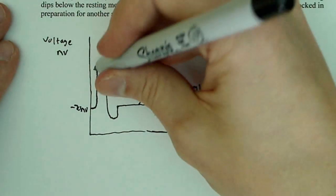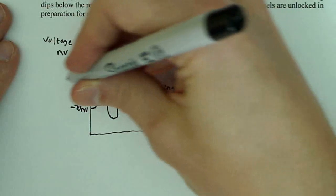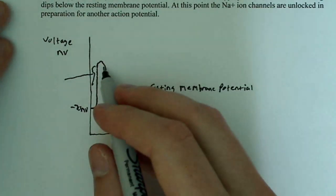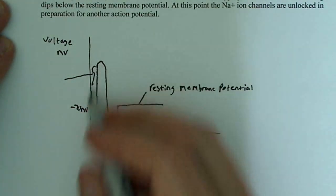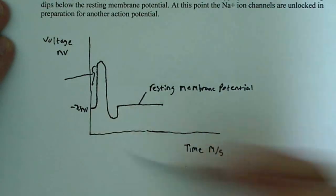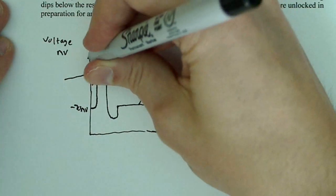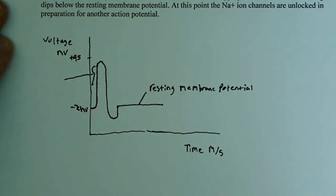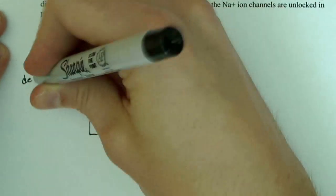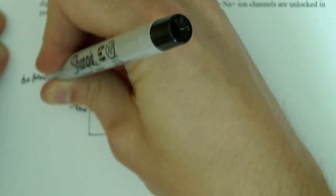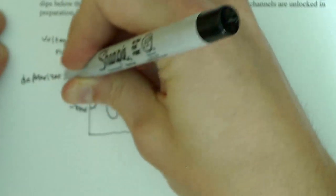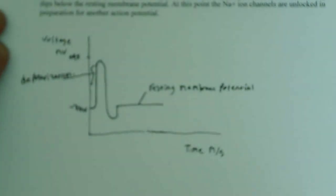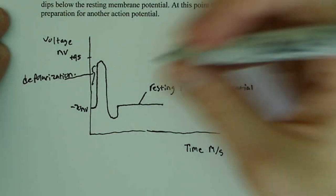This part of the graph — the rapid positive increase from negative 70 millivolts up to about plus 45 millivolts — is known as depolarization. So that's the depolarization phase.